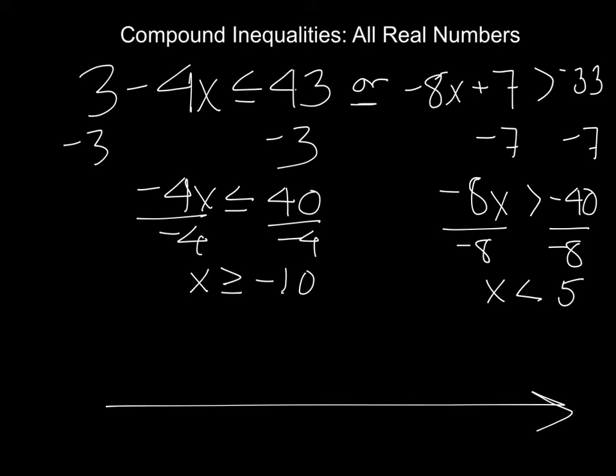So we begin looking at the graph. We start by putting in some of the key numbers on the graph, so here is -10 and here is 5.